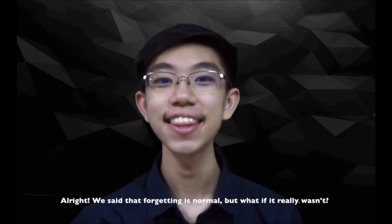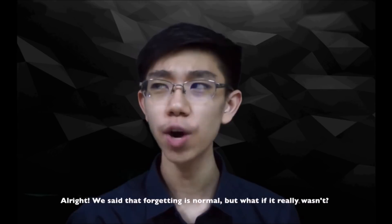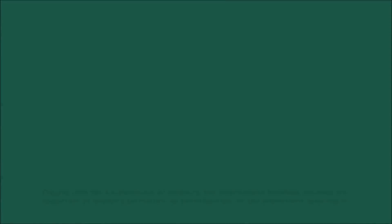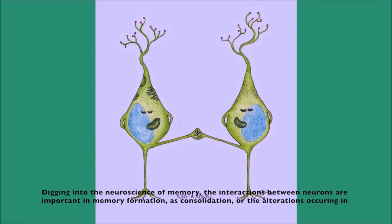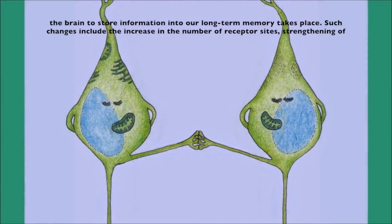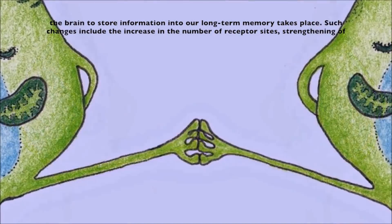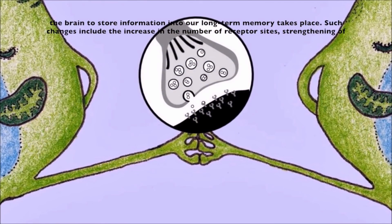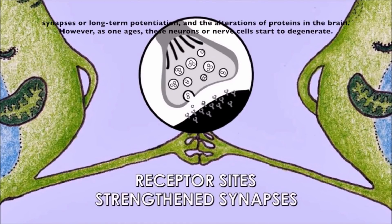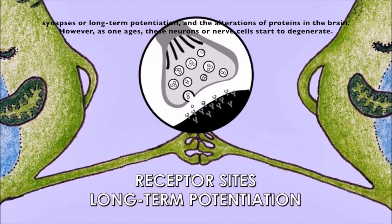We said that forgetting is normal, but what if it really wasn't? Digging into the neuroscience of memory, the interactions between neurons are important in memory formation, as consolidation — the alterations occurring in the brain to store information into long-term memory — takes place. Such changes include the increase in the number of receptor sites, strengthening of synapses or long-term potentiation, and the alteration of proteins in the brain.